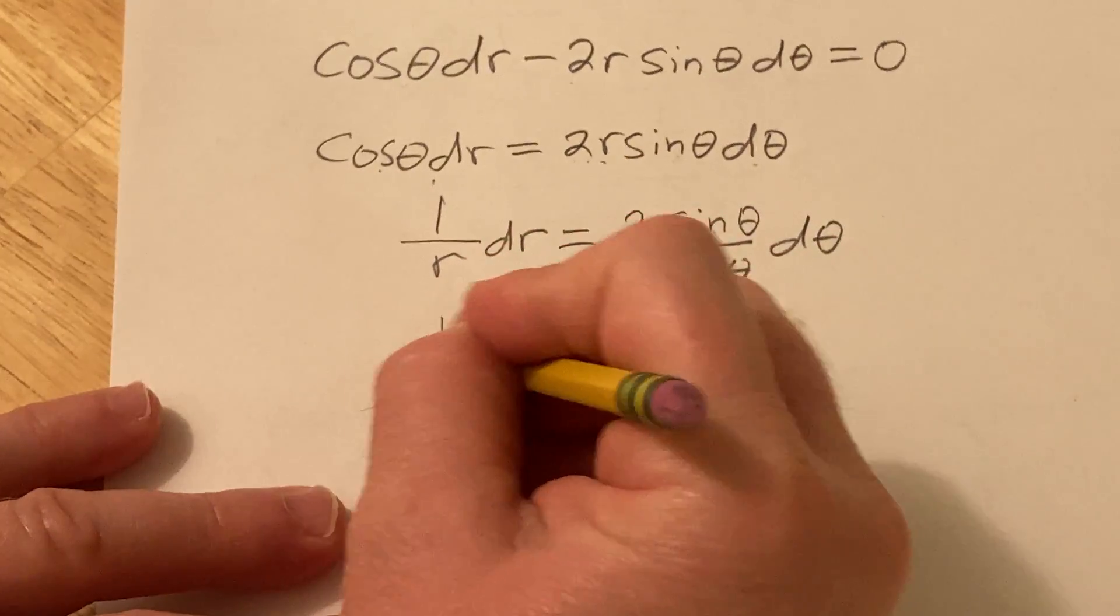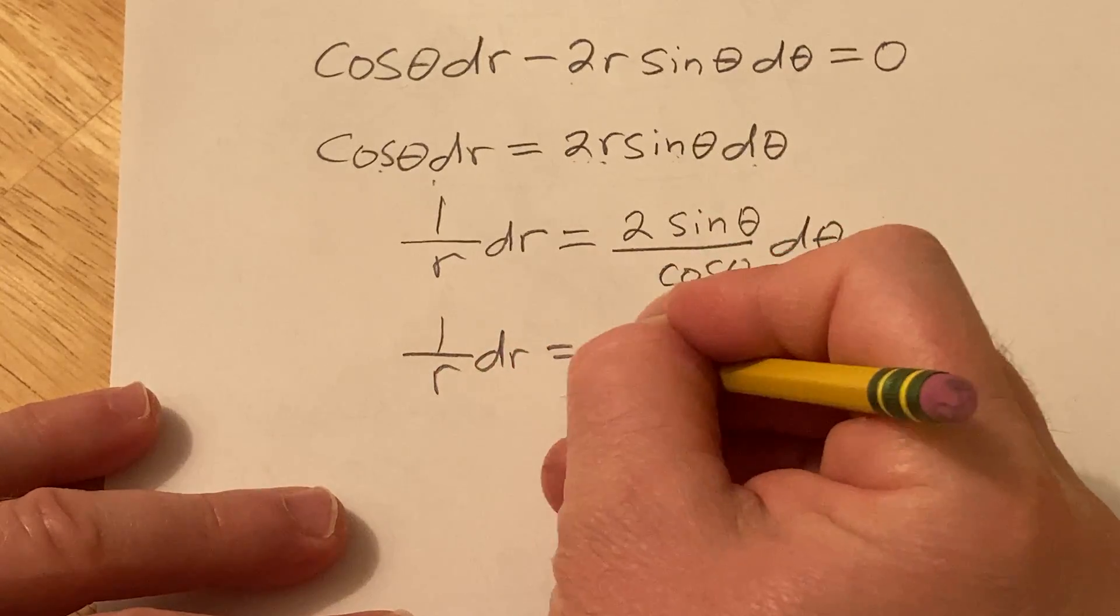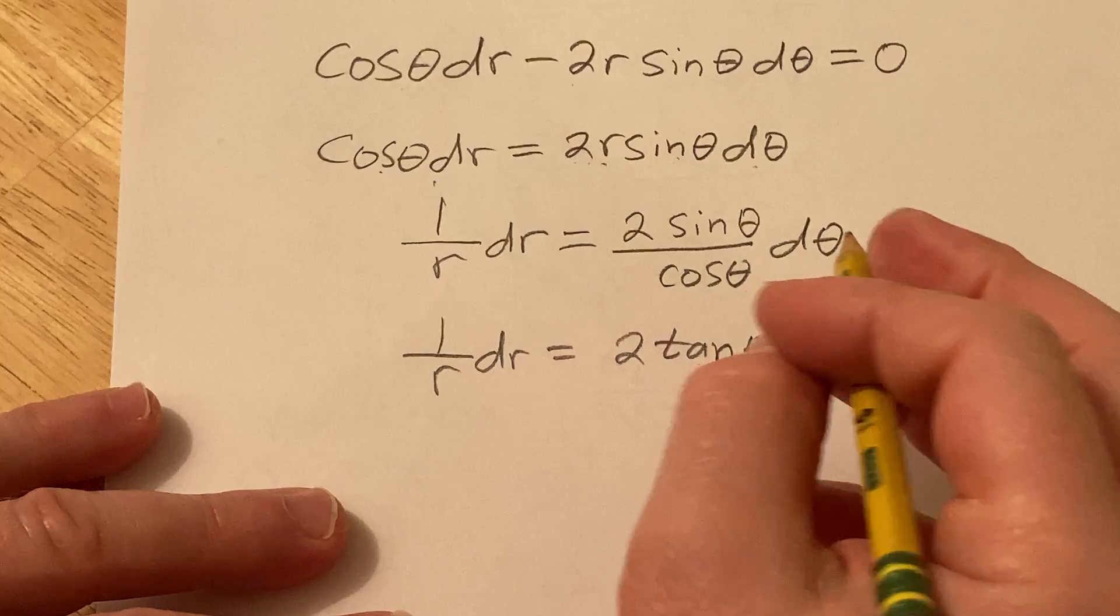So this is 1 over r dr, and this is 2 tangent theta d theta.